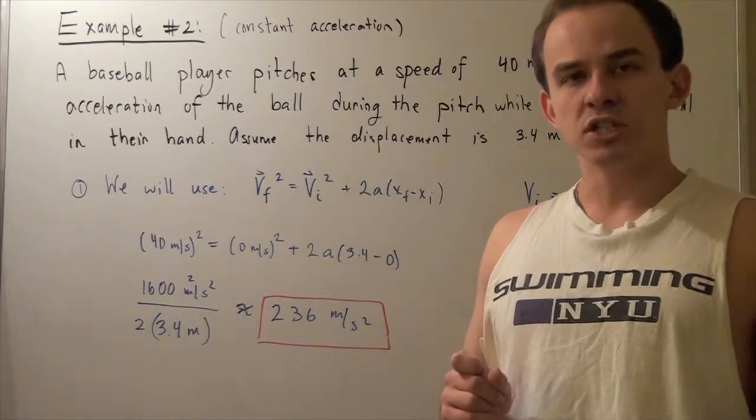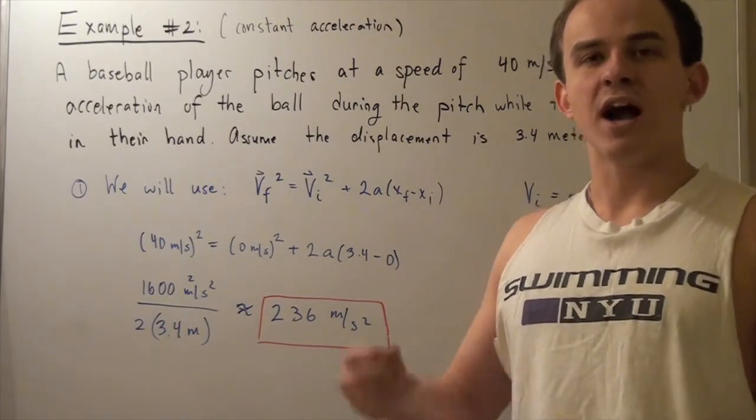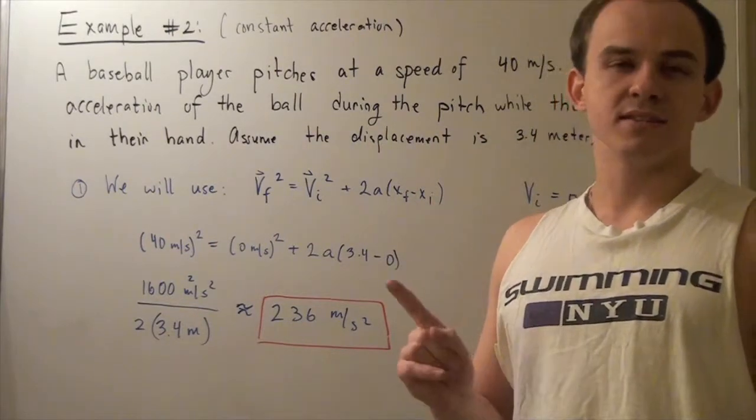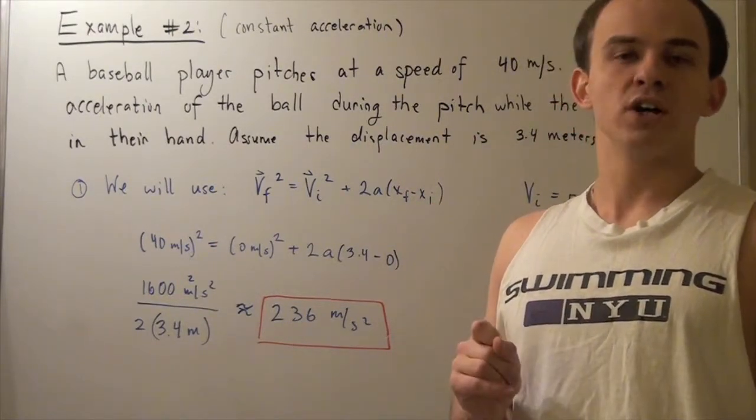We're going to make the assumption that the ball travels on a linear path and it travels a displacement, or a distance in this case, of 3.4 meters.